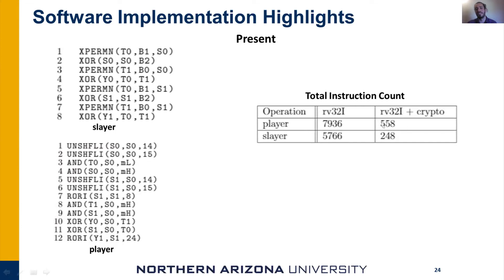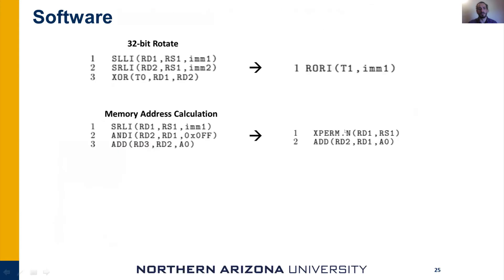You can see the gain we get by using these instructions. For example, instead of three instructions for a 32-bit rotate using the default instruction set, we can use only a single instruction — three times fewer instructions. We can also use such a reduction for memory address calculation by using Xperm instructions. This memory address calculation is very common in block ciphers because almost all of them use S-boxes that must be read from memory.